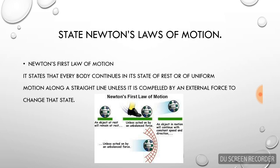First, Newton's laws of motion. There are total three laws. If you look at physics, we will see real-time examples — for example, football, fidget spinner, day-to-day life. First law of motion states that everybody continues in its state of rest or uniform motion along a straight line unless it is compelled by an external force to change the state.